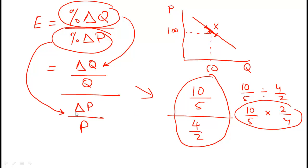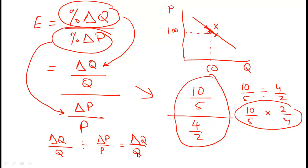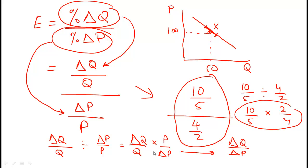Applying the same rule to the elasticity formula: (Δq / q) divided by (Δp / p) becomes (Δq / q) multiplied by (p / Δp). Rearranging, this is Δq over Δp, multiplied by p over q — just basic algebraic manipulation.